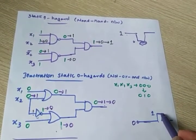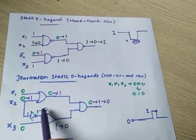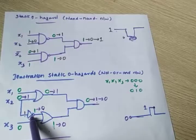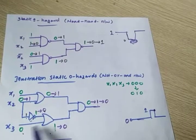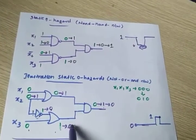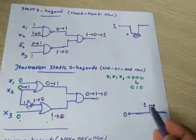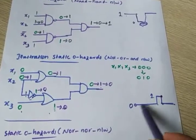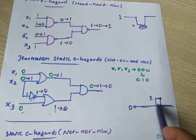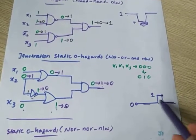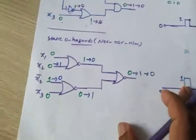After some time duration, the propagation delay is over. After the propagation delay, this 1 becomes 0. So 0, 0 — output is 0. Now 0 into 1 is 0, output is 0. So output goes back to 0. So this is static 0 hazard. We are expecting 0, but due to the propagation delay at this NOT gate, a 1 came into the picture. That 1 exists for a short duration, but still there exists an unwanted state, and this is actually called a hazard.